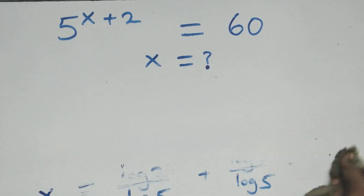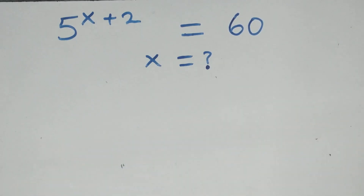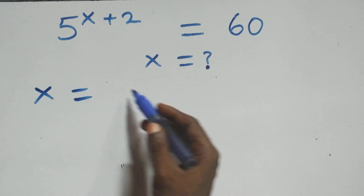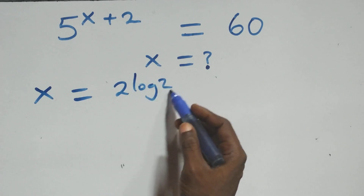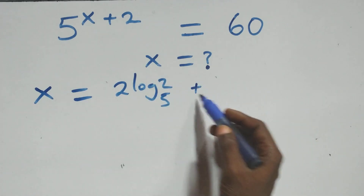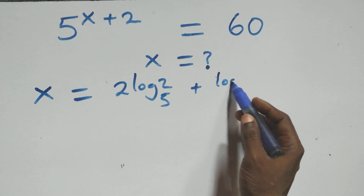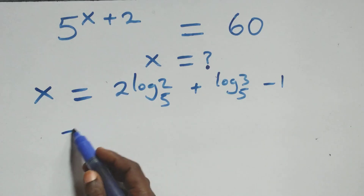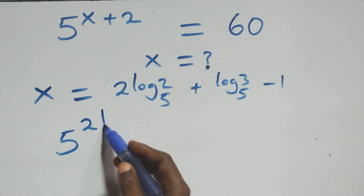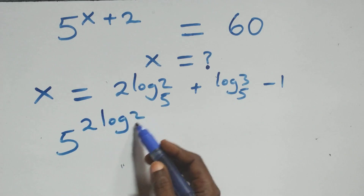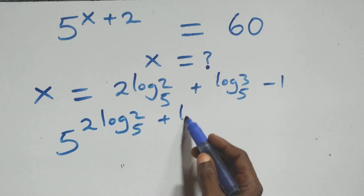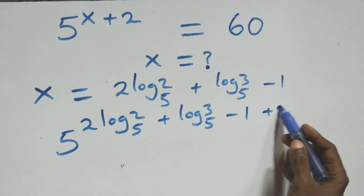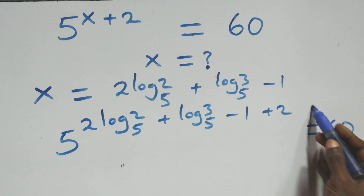Let's verify by substituting x equals 2 log₅2 plus log₅3 minus 1 back into the original equation. We get 5 raised to power (2 log₅2 plus log₅3 minus 1) plus 2, and this should equal 60.